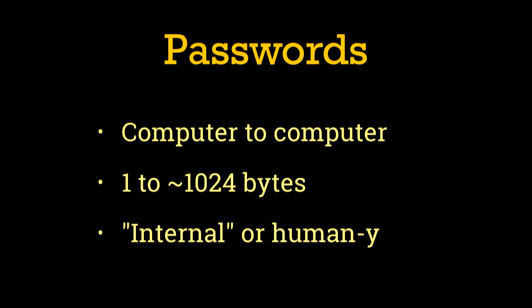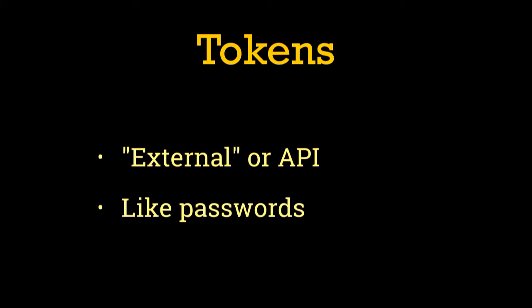They're usually just going to be ASCII. Some examples include SQL passwords, HTTP proxy passwords, or Linux login passwords. To contrast that, we have tokens. Tokens are usually things built for server-to-server interaction from the ground up. With a token, it needs to be in its raw form to be usable. Other than that, they're relatively similar to passwords. Some examples include API credentials for PagerDuty or OAuth access credentials.